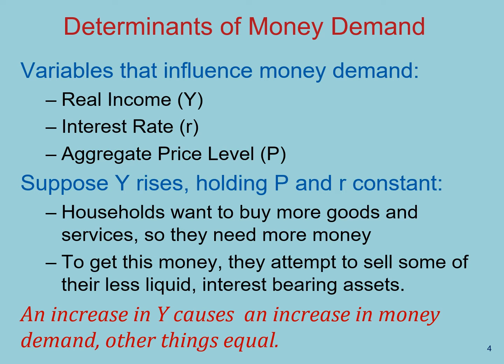Let me explain how real income influences the demand for money. Suppose that real income rises, holding prices and interest rate constant. The increase in real income means that households will likely want to increase the demand for goods and services. In order to purchase more goods and services, households will need more money — in other words, more liquidity. They will sell some of their interest-bearing assets and convert them into money, these more liquid assets. For that reason, an increase in real income increases money demand, other things held constant.